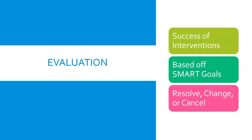Lastly, we have evaluation — looking at the success of our interventions. This takes us back to our SMART goals, which we made measurable and time-bound so that we can revisit them at a certain point and see if the measurement has been reached and the goal was successful. At the evaluation stage, we also review our care plan to see if it has been resolved, if we need to make changes and go back to reassessment, or if the plan is no longer appropriate and we need to start from scratch and cancel it.